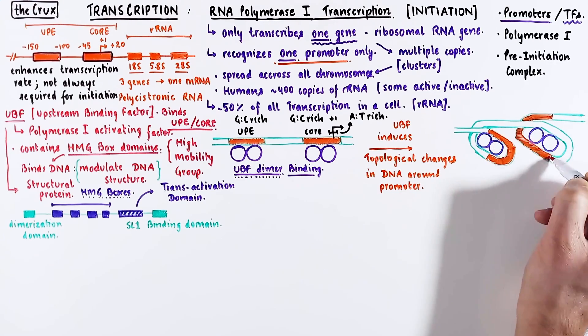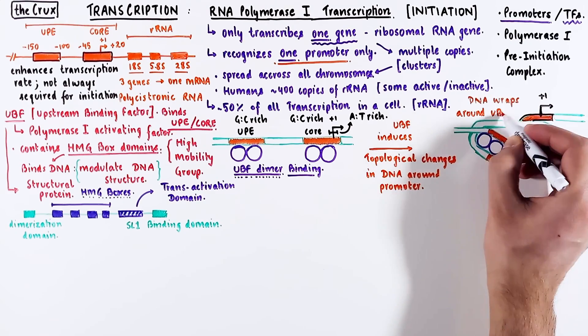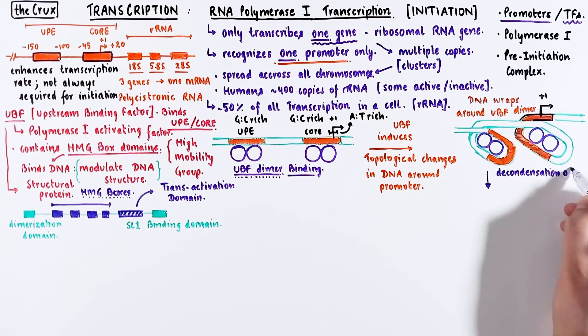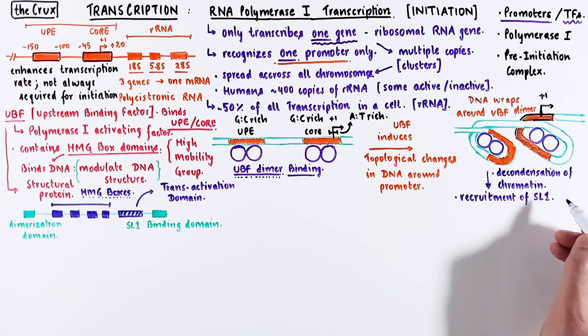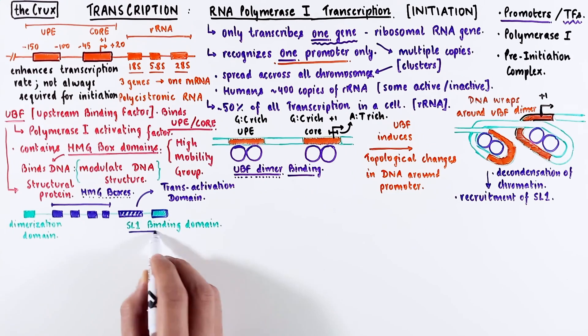Specifically, it is the core promoter and the UPE which wrap around the UBF. This structural modulation of the DNA decondenses the chromatin around the promoter, which enables the recruitment of SL1 protein. This happens via the interaction of the SL1 binding domain in the UBF protein.